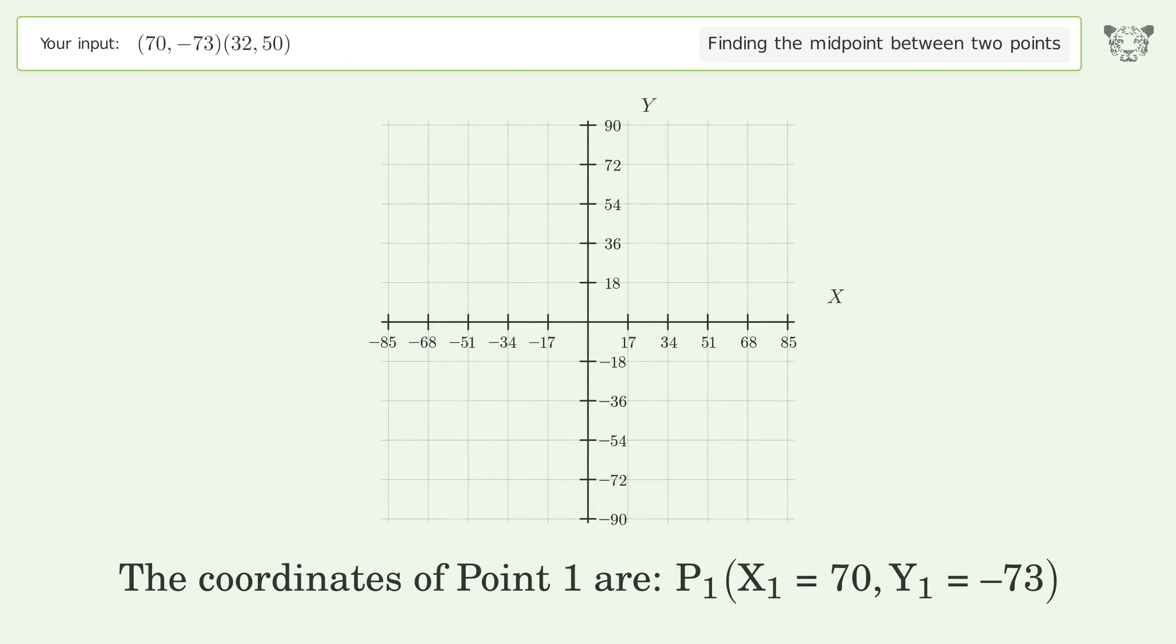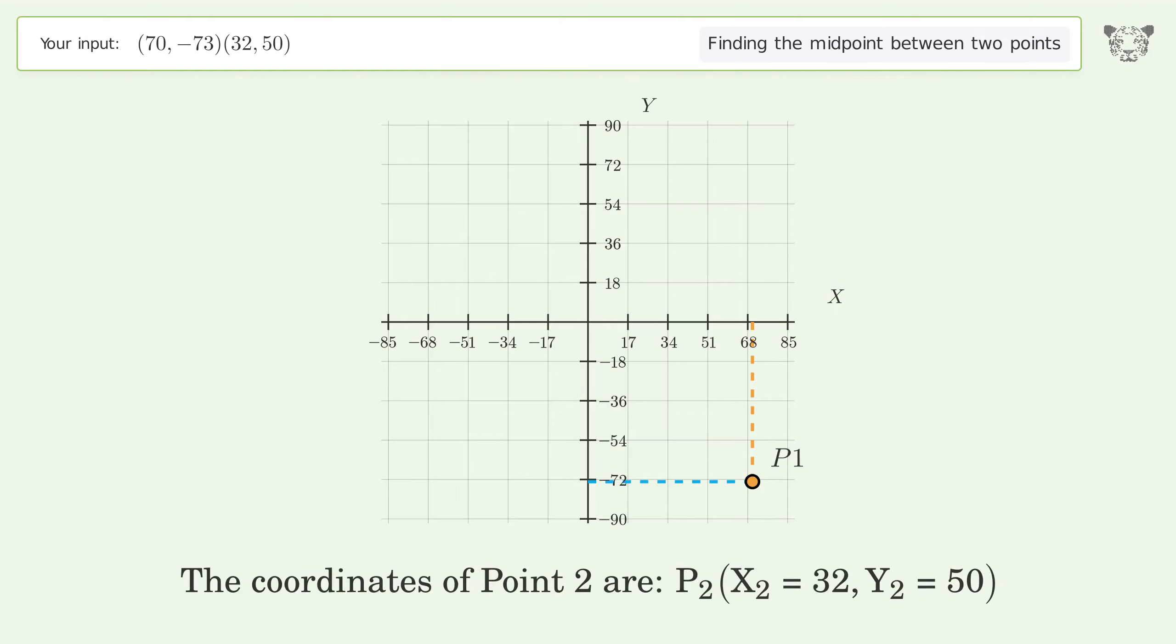The coordinates of point 1 are x1 equals 70, y1 equals negative 73. The coordinates of point 2 are x2 equals 32, y2 equals 50.